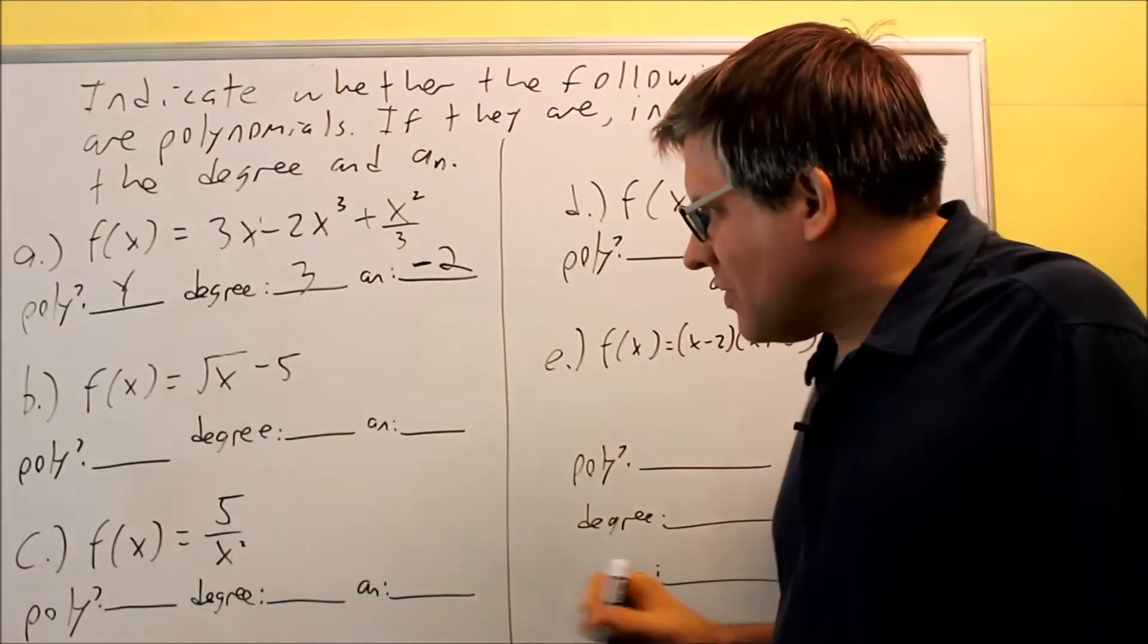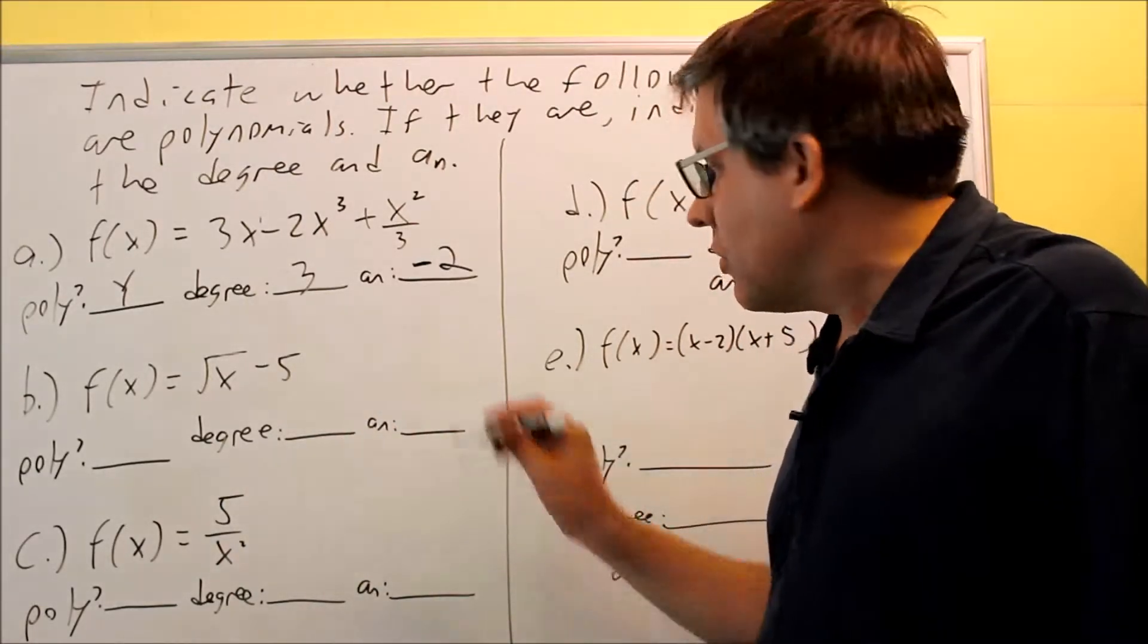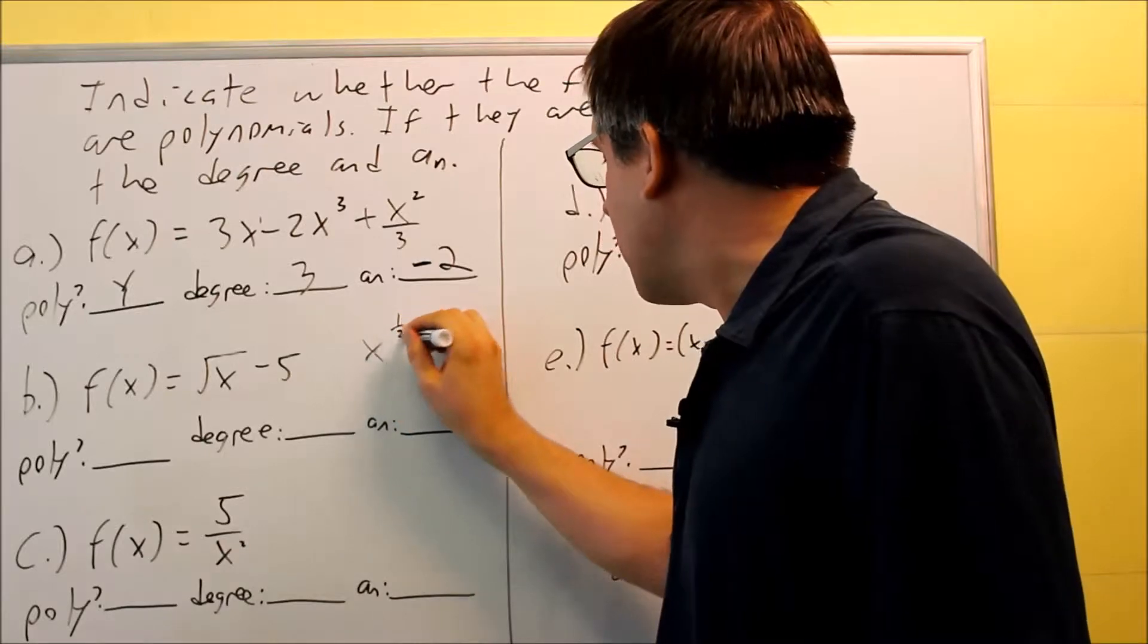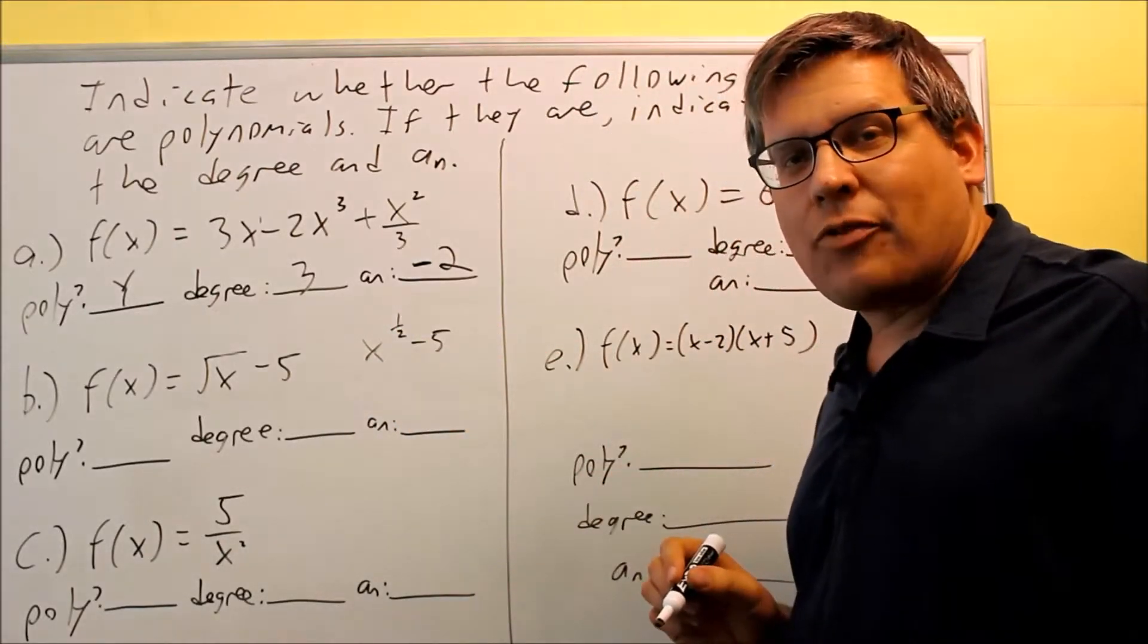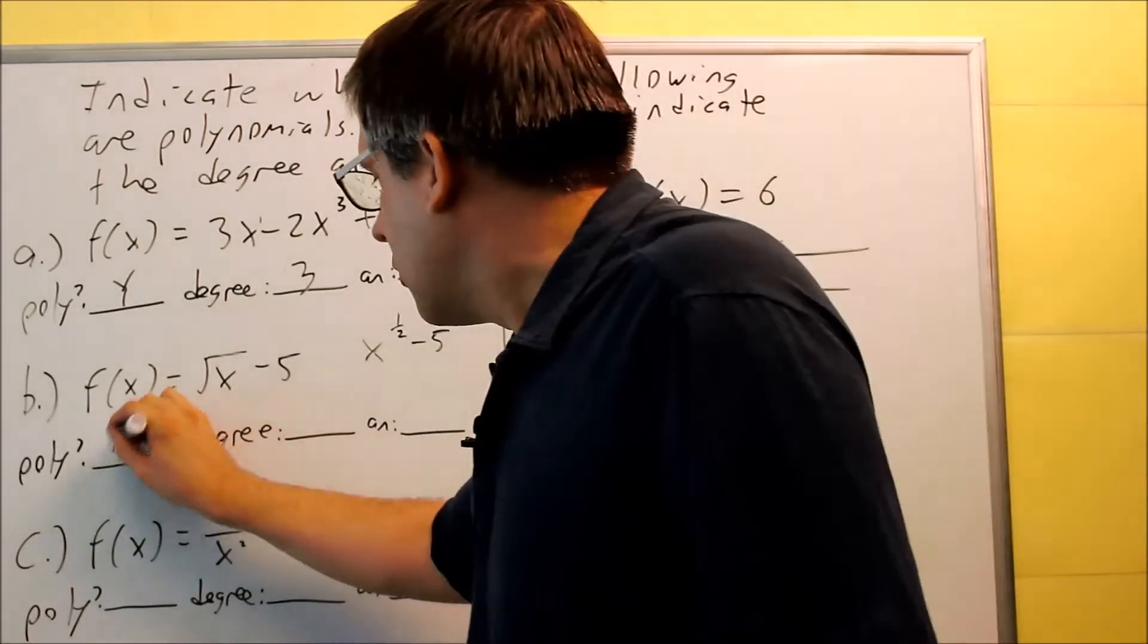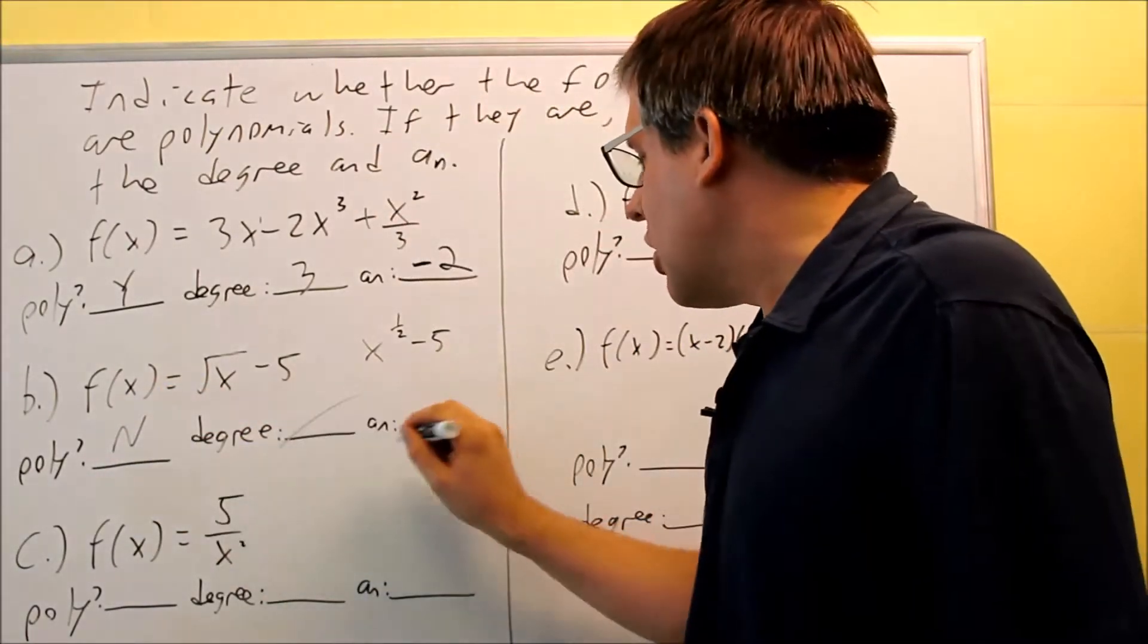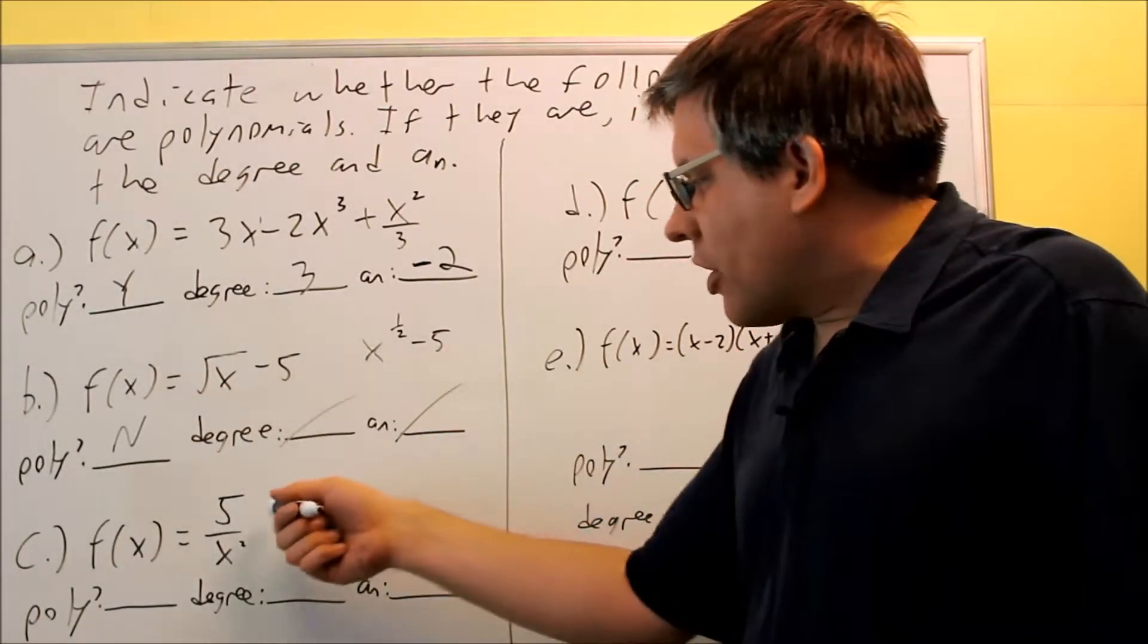Okay, how about the next one? I have the square root of x minus 5. Now, square roots can be written as fractional powers. So actually, this can be written as x to the 1/2 minus 5. That's a fractional power, so it's no. And so I'm not able to do these because it's not considered to be a polynomial.